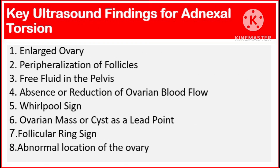Key ultrasound findings for adnexal torsion: Number 1, enlarged ovary. 2, peripheralization of follicles. 3, free fluid in the pelvis. 4, absence or reduction of ovarian blood flow. 5, whirlpool sign. 6, ovarian mass or cyst as a lead point. 7, follicular ring sign. 8, abnormal location of the ovary.